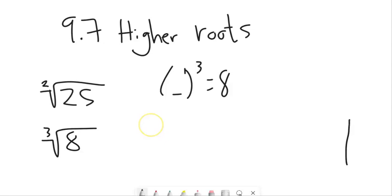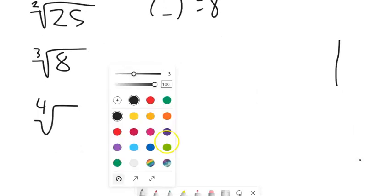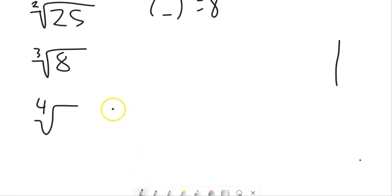Or I could say what to the fourth power would give, I don't know, 81, something like that. I know I wrote 181. I meant to write 81. So this is asking what to the fourth power would give me 81?